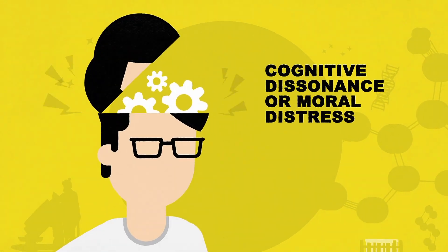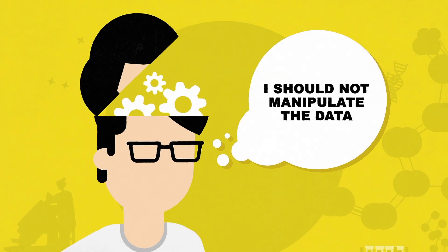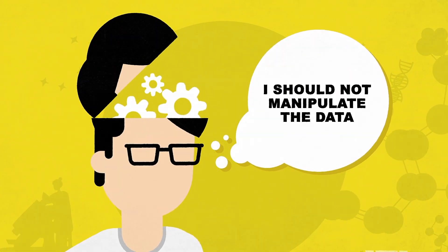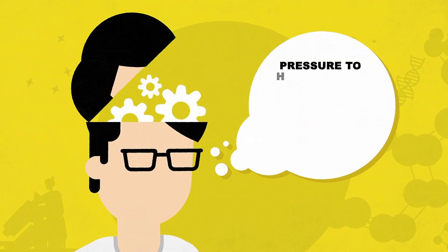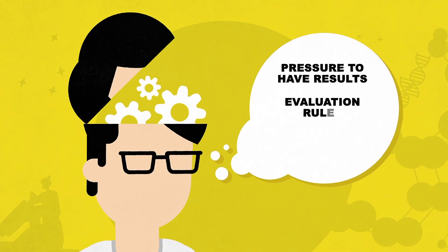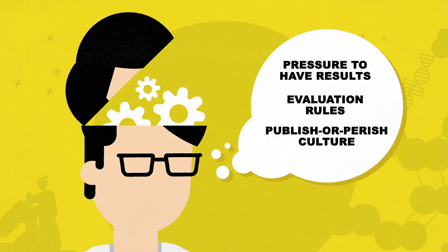This may be because he knows that he should not manipulate the data, but is prevented from doing the right thing by barriers and adverse incentives, such as pressure to have results, evaluation rules, publish or perish culture.